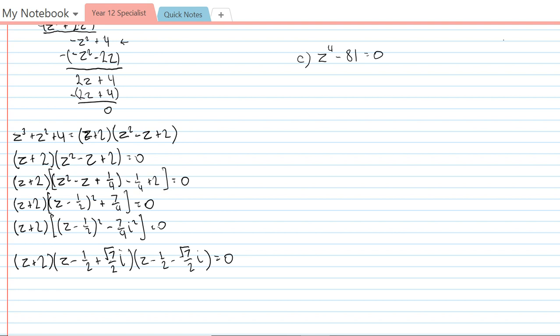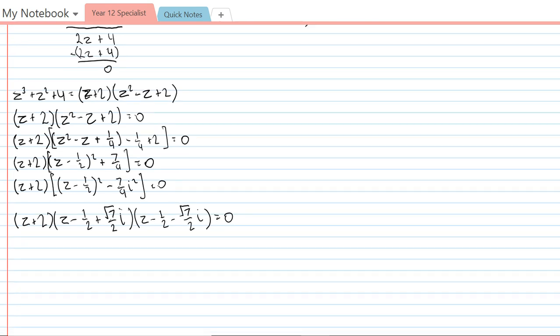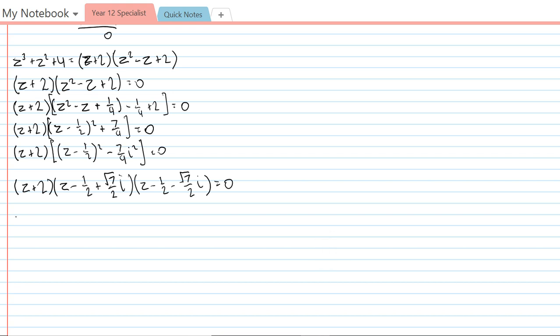So we've completely factorized it, and now to solve it, just need to use the null factor law. So therefore z should equal -2, or z should equal 1/2 plus or minus √7/2 i. And those are our three solutions to the equation.